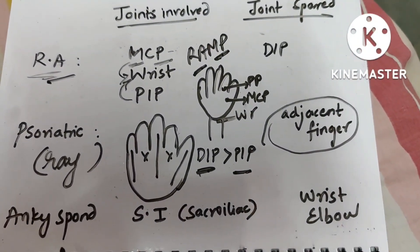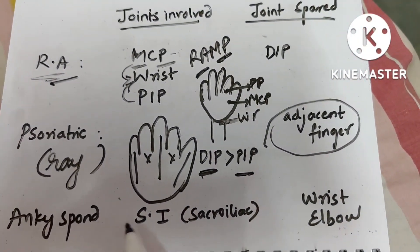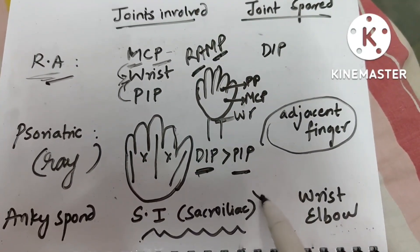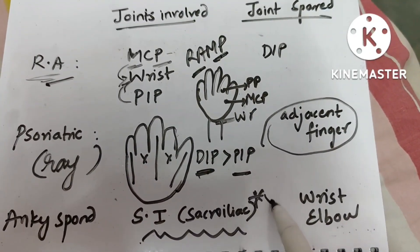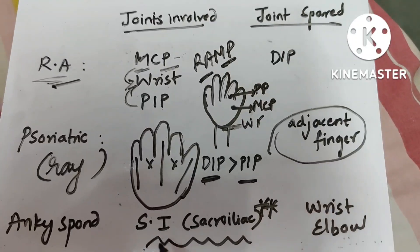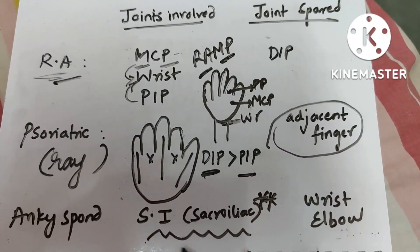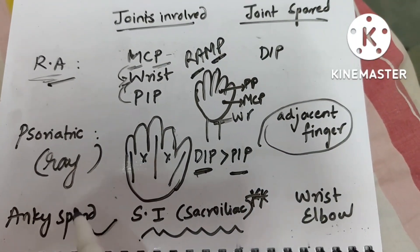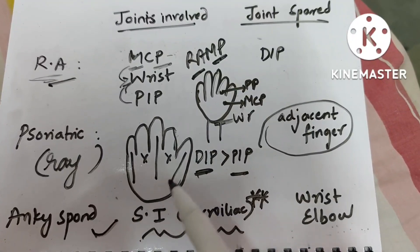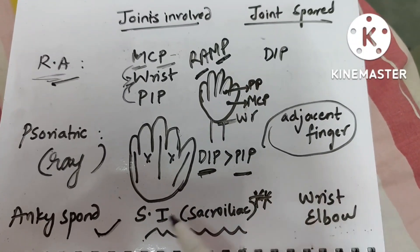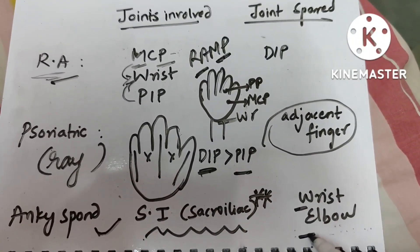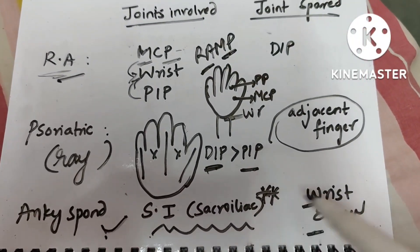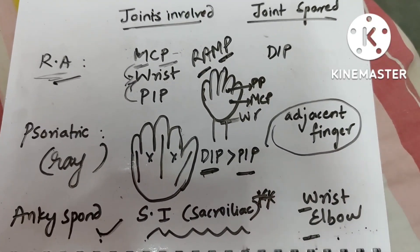In ankylosing spondylitis, the sacroiliac joint is the most commonly involved — this is the most well-known and frequently asked feature. The joints spared in ankylosing spondylitis are the wrist and elbow.